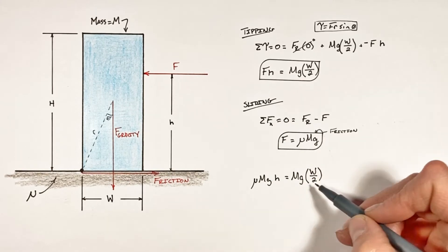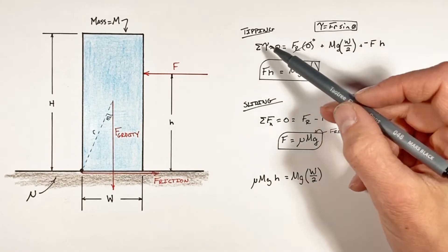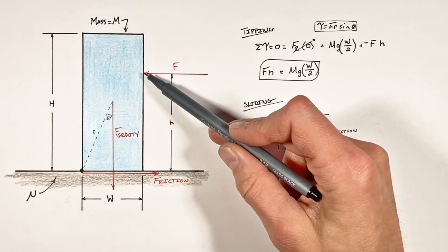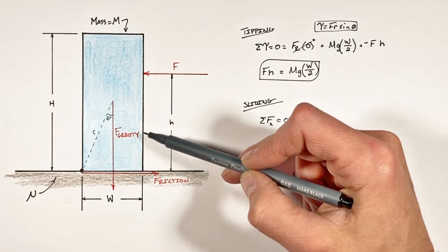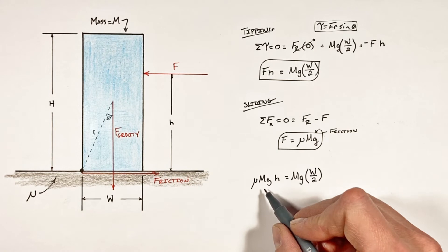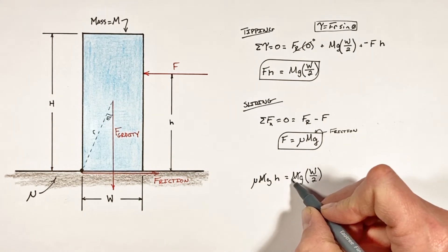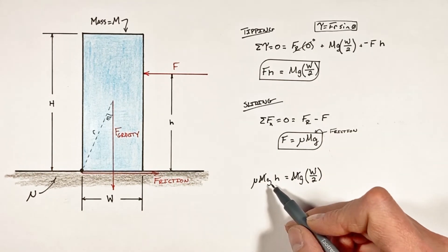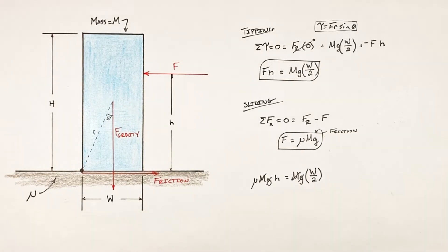We have an expression that takes into account both the linear forces and torques right at this transition between the block sliding and tipping. Now you'll see the mass of the block is on both sides of the equal sign, so it cancels out, as does g, and this leaves us with this expression...